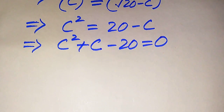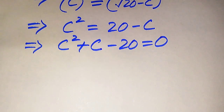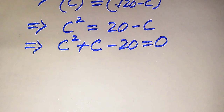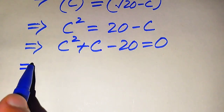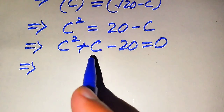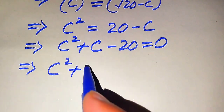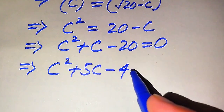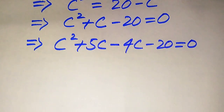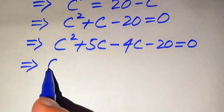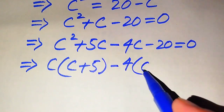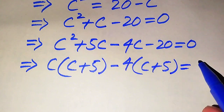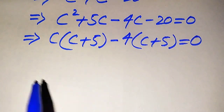There are three methods to solve a quadratic equation: factorization, completing the square, and the quadratic formula. Here I will use the factorization technique. To make the factors, we need to break the middle term of this equation. The middle term is plus C, and we write it as 5C minus 4C, giving C squared plus 5C minus 4C minus 20 equals 0.